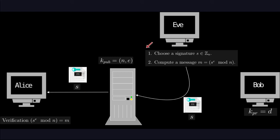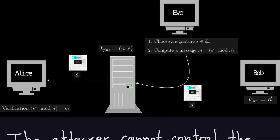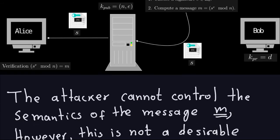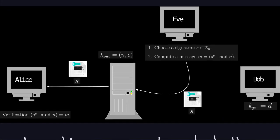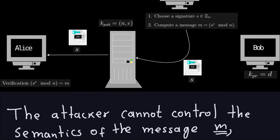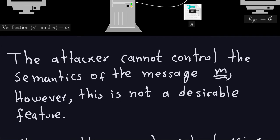Eve's approach is kind of backwards. You might think this is a big problem, but there is a drawback for Eve: she cannot control the semantics of message M, because M has to be calculated. The only thing she can control is the signature S, but she doesn't know what message she will get. For example, she cannot create a signature valid for a message in plain English that makes sense, because she doesn't know what M she's going to get unless she chooses S first, and that M might not make any sense in English.